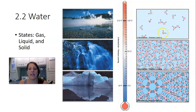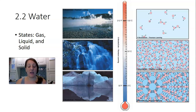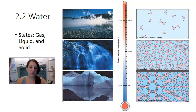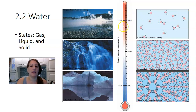When we look at the gaseous state, all those hydrogen bonds that existed in liquid water have been broken and the water molecules have higher energy and have gone into the gaseous state. Water will boil at 100 degrees Celsius, giving us that conversion of liquid to gaseous water molecules.